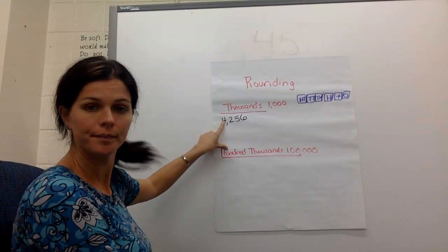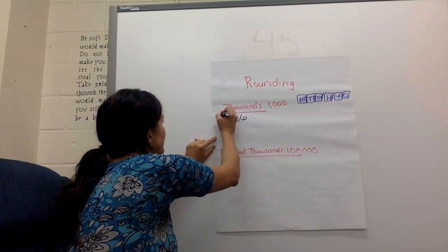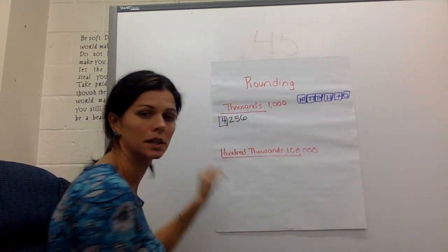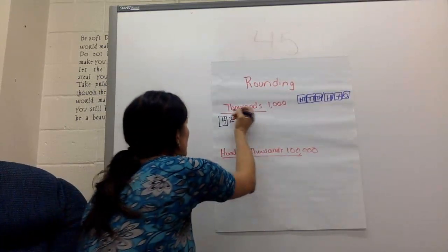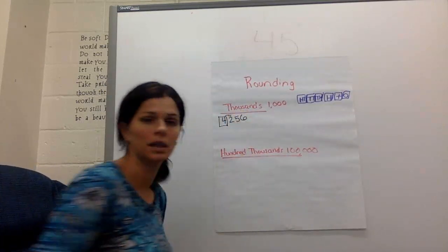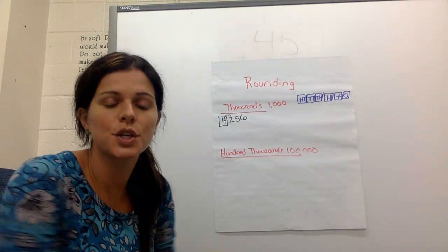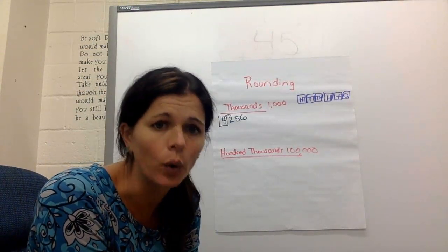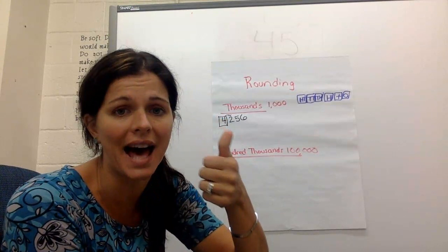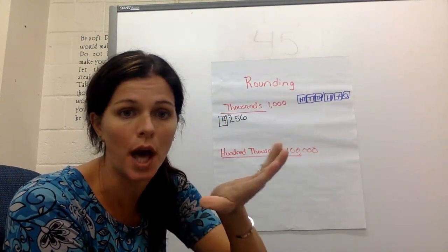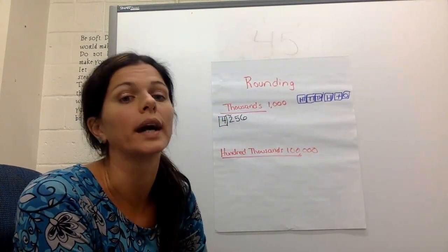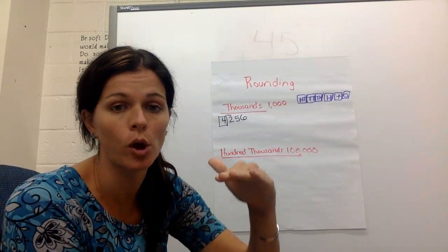One, two, three, four. You draw the box around the thousands. You look next door at that 2. The 2 is going to be doing all the work. So is 2 above 5? Is it bigger than 5? No. Is it below 4? Yes, because 2 is smaller than 4.